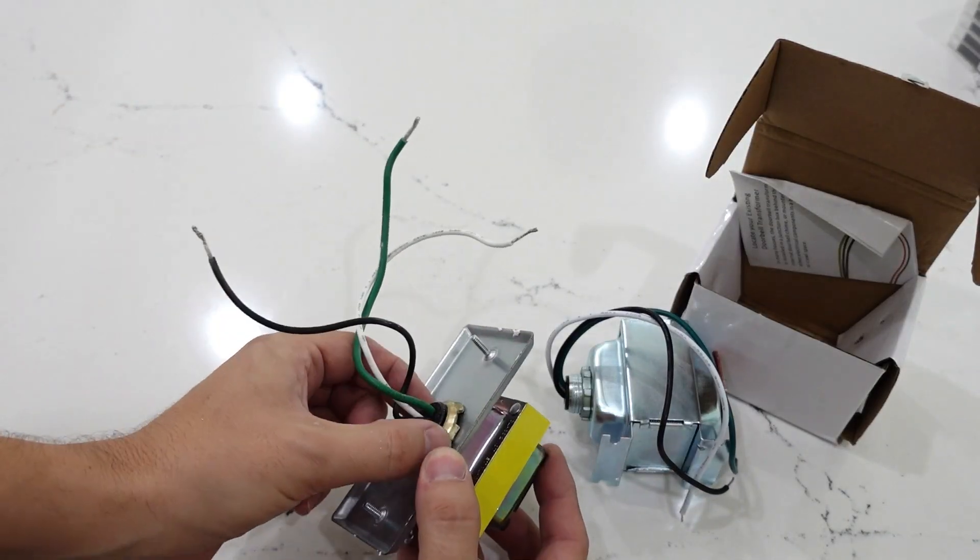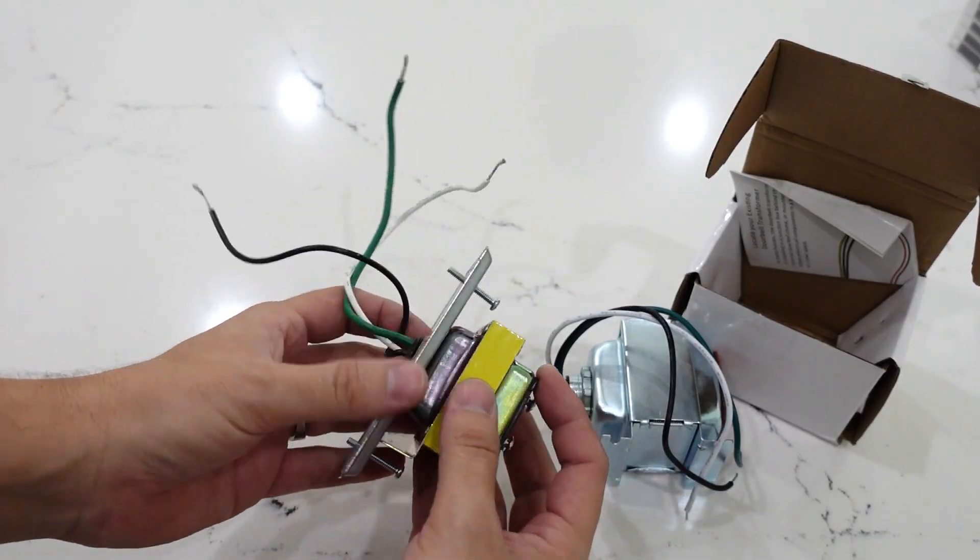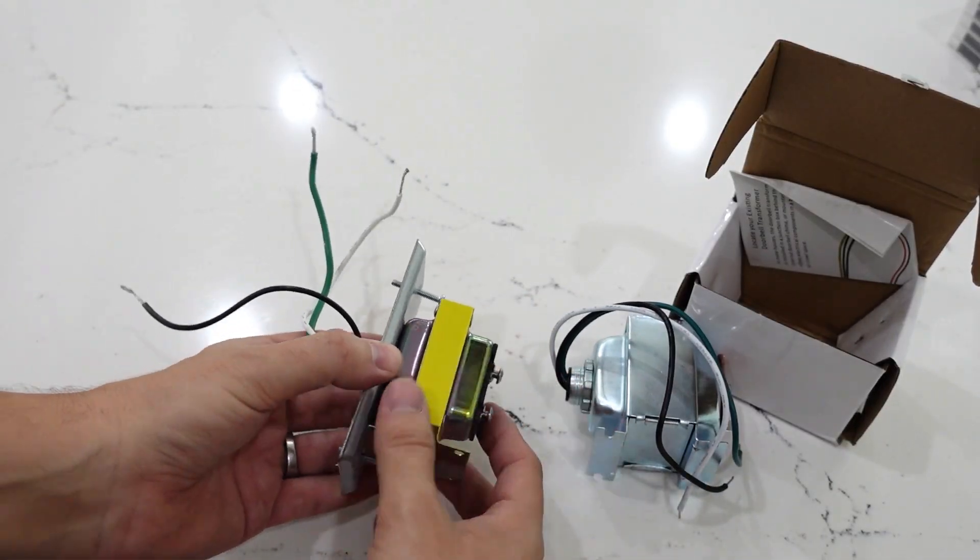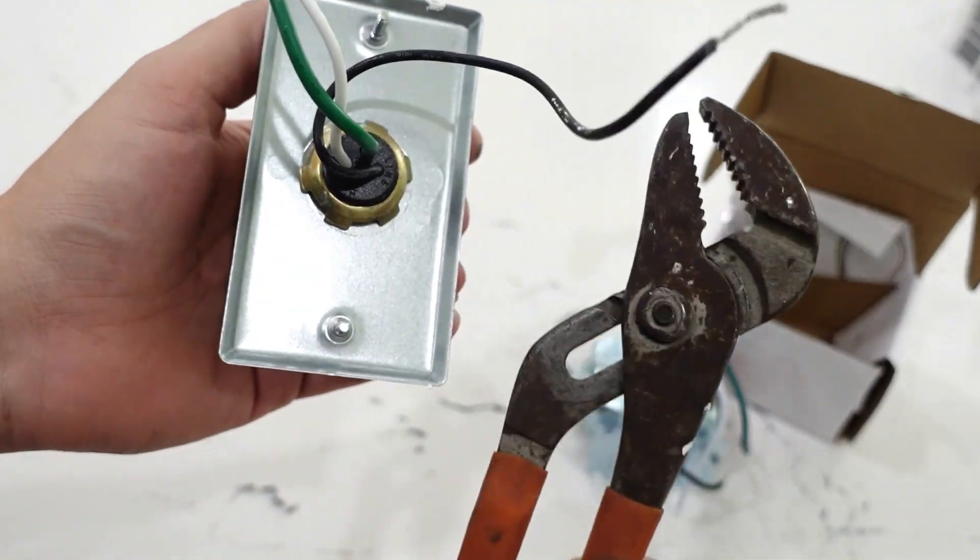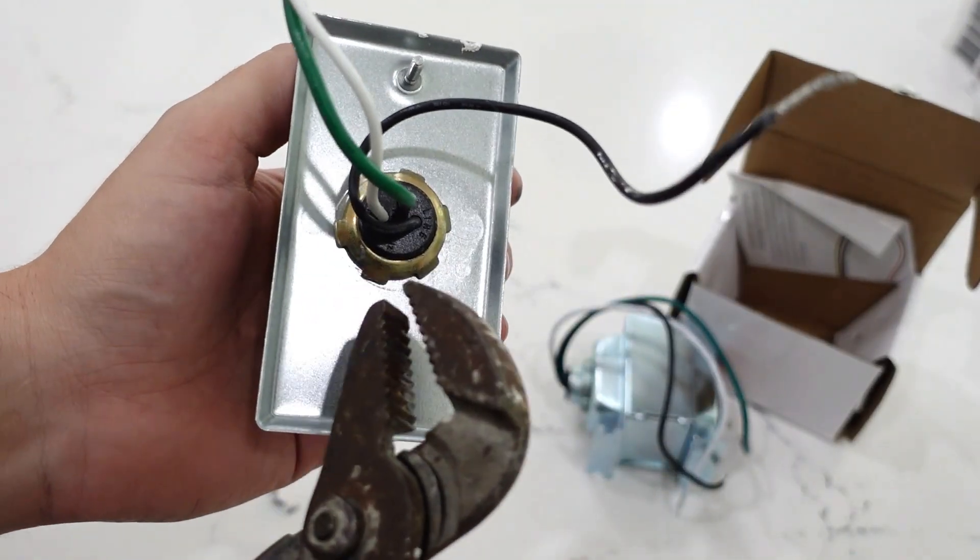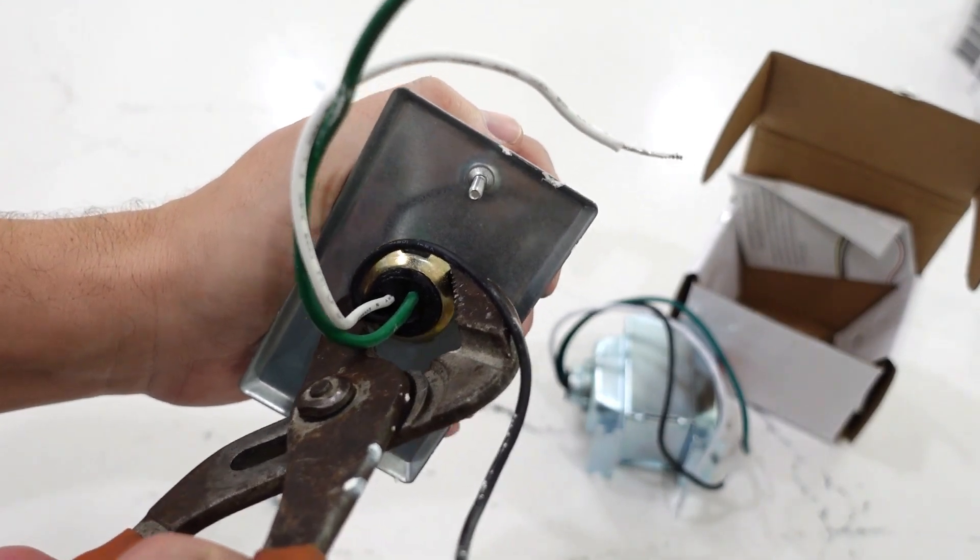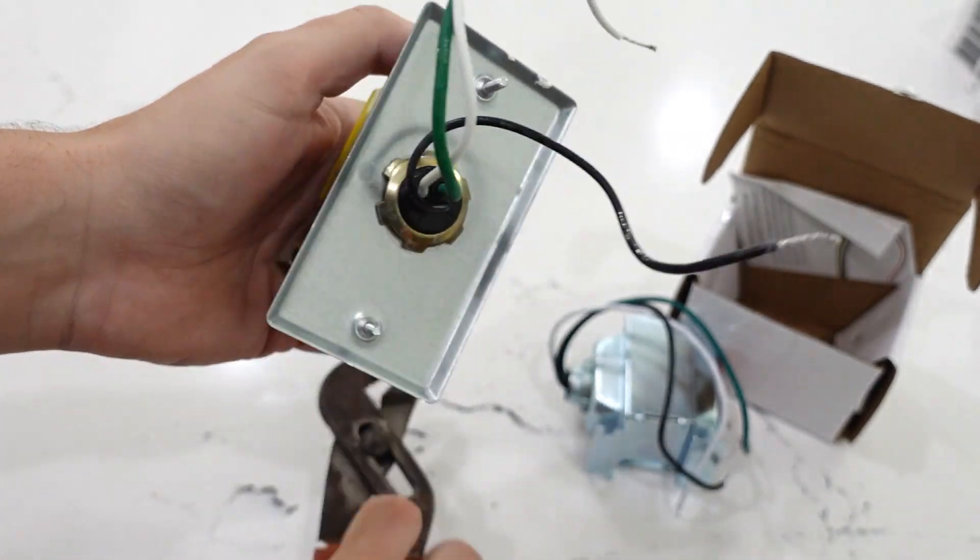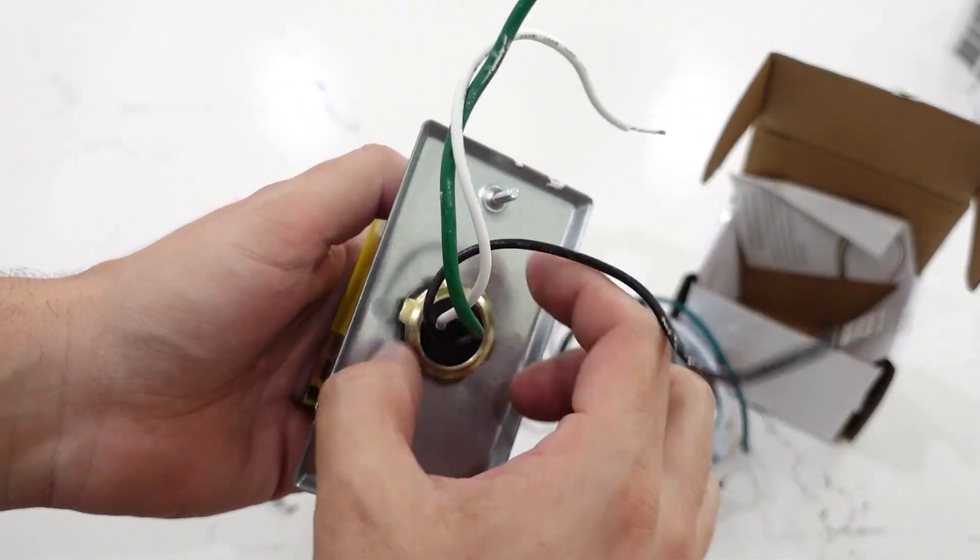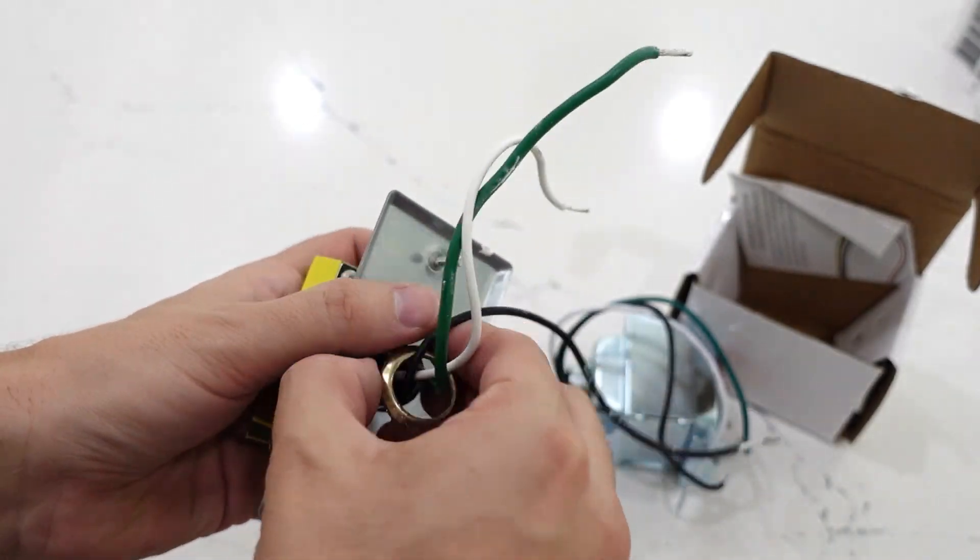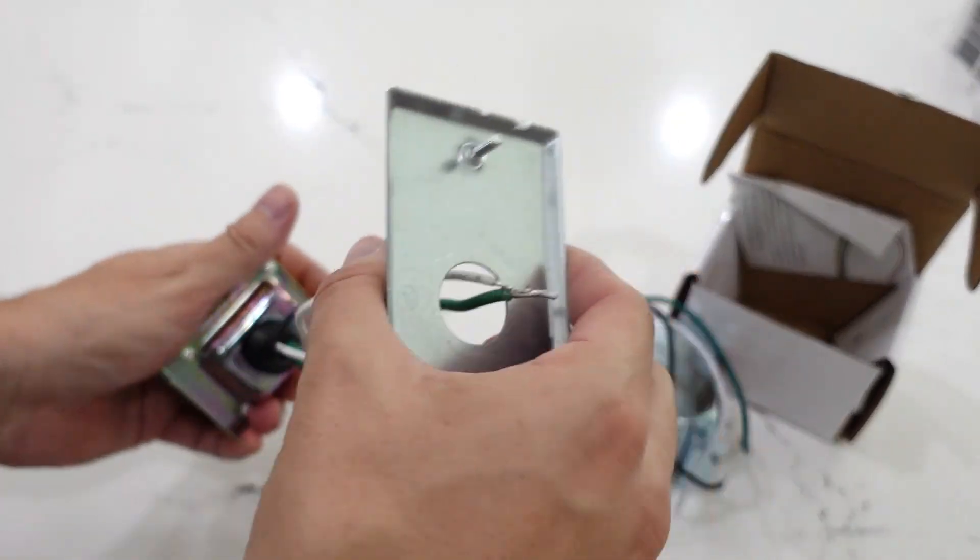So now what we do is we got to take this off, unscrew this, pull this out, unscrew that, pull it back in. You can use some channel locks or pliers or screwdriver, and basically just grab this and try to turn it. Once you get it started, you can remove it by hand and just pull it out. Pull this one out.